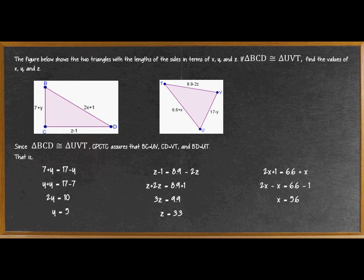Now for X, we have 2X plus 1 equals 6.6 plus X. We need to combine like terms, so we transpose X to the other side. So we have 2X minus X equals 6.6 minus 1, and now we have X equals 5.6.